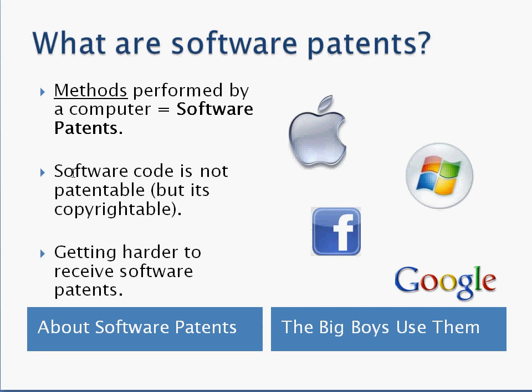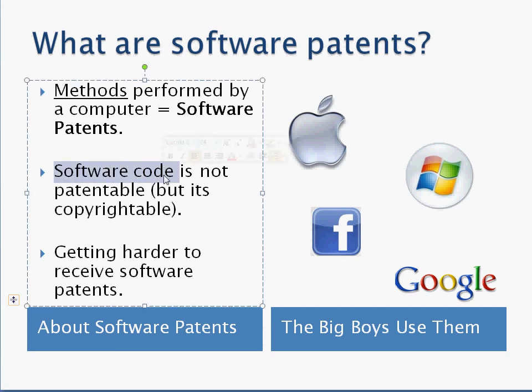Software can be protected two different ways. The software code is actually protected under copyright, and that's a really easy way to protect your software code. But if your software code is more than just code — more than just a website or a blog — if it's actually a neat piece of software that can perform a new and useful method or function, then that would also fall under the patentable category. So you could actually protect it by both copyright and a software patent.